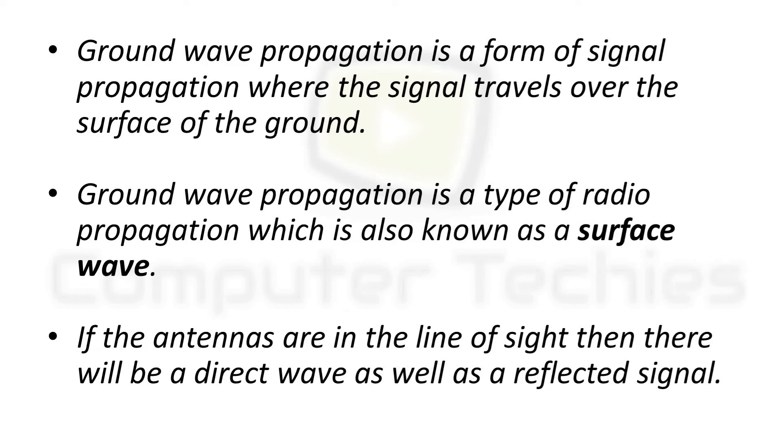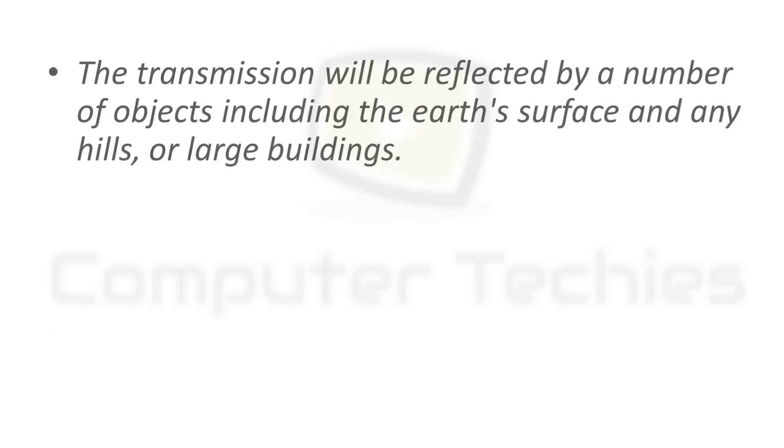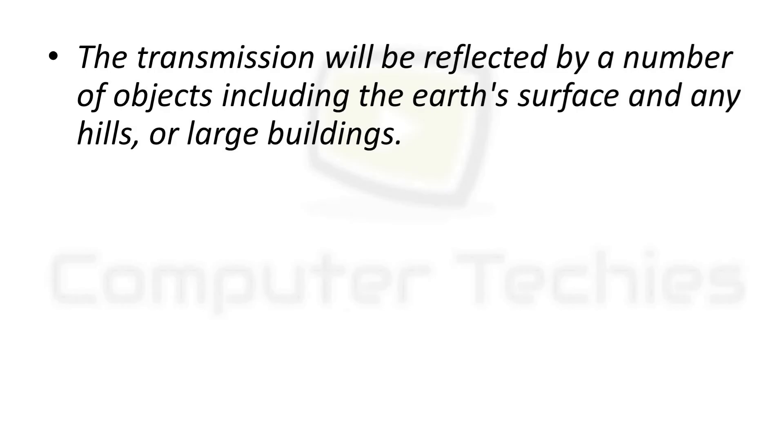If the antennas are in a line of sight, then there will be a direct wave as well as a reflected signal. The transmission will be reflected by a number of objects including earth's surface and any hills or large buildings.